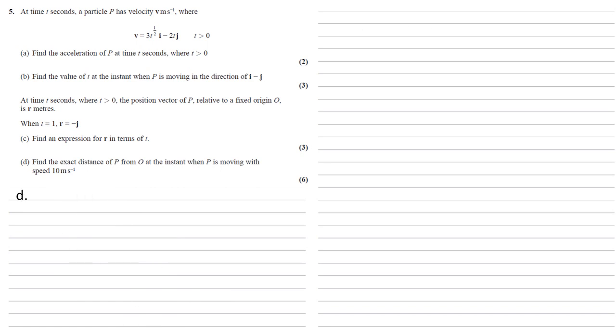For part D, we need to find the exact distance of p from O at the instant when p is moving with speed 10 meters per second. So if we've got a speed of 10 meters per second, this means if we can find the absolute value of the velocity, which is the square root of the sum of the squares of the coefficients of i and j, this has got to be equal to that speed of 10.